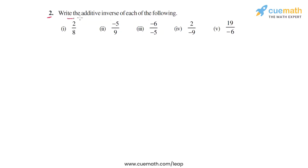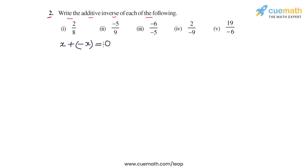In question 2, we have to write the additive inverse of each of these five rational numbers. The additive inverse of any number is another number such that if you add the two numbers, you get 0. So if you take a number x, the additive inverse of x will be minus x, because if you add x and minus x, you will get 0.